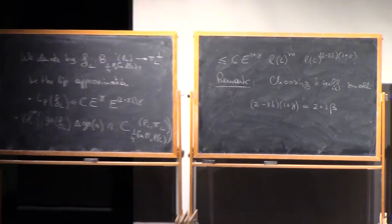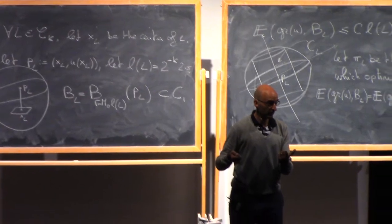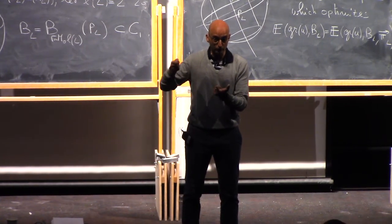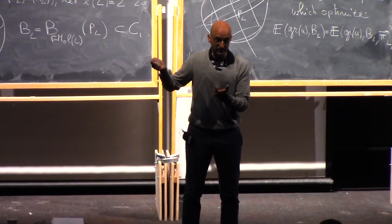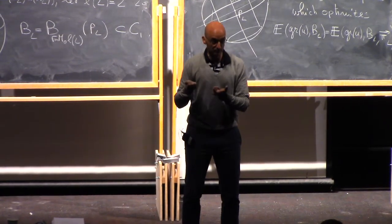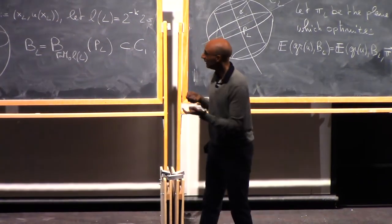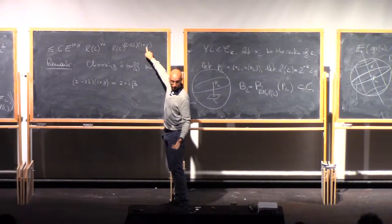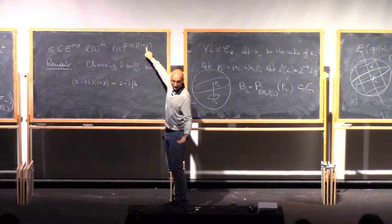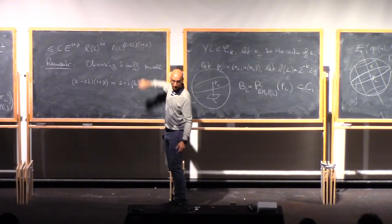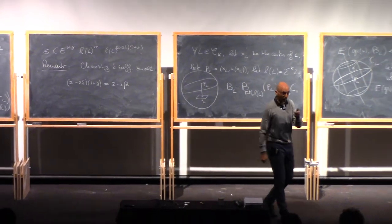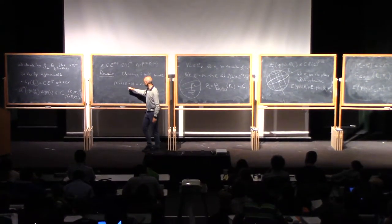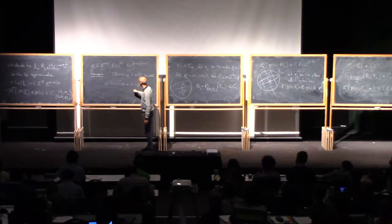This is a key point. If you go back to the proof of De Giorgi's theorem, what was needed in De Giorgi's theorem was a harmonic approximation which is close as a little-o of the excess. So we didn't need to gain a power. Here you see where this power gain is important: it's important for the proof of Almgren's theorem. If we didn't have a positive γ, we wouldn't be able to go above 2 in this estimate.